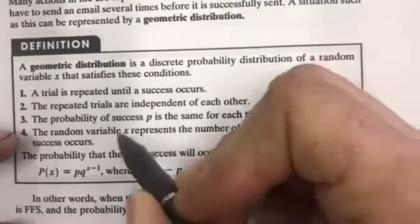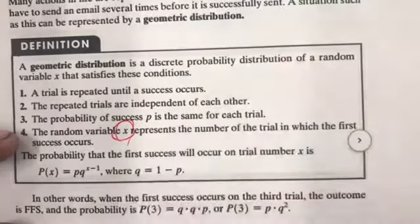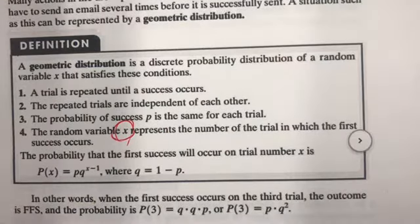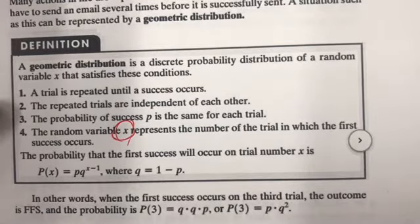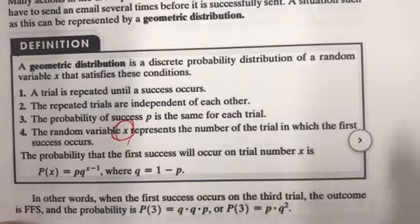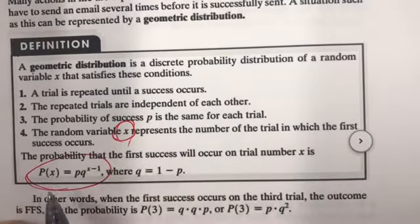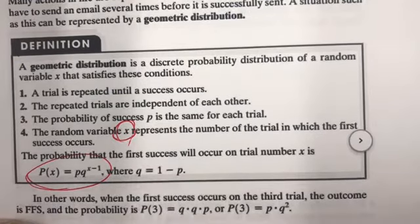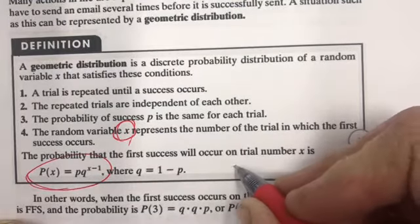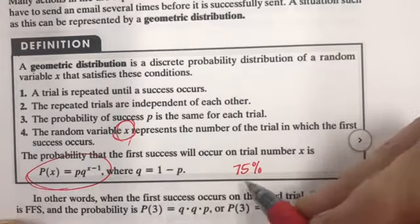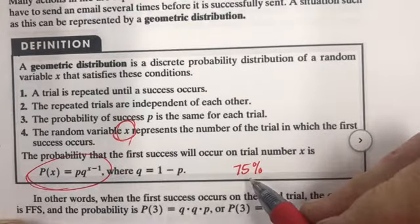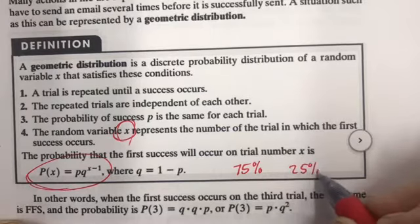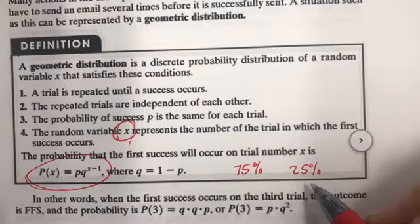Number four: the random variable X represents the number of the trial in which the first success occurs. The probability formula is P(x) = p · q^(x−1), where q = 1 − p. For example, if you shoot 75% on free throws, then q = 25%, which is the probability of missing a free throw.